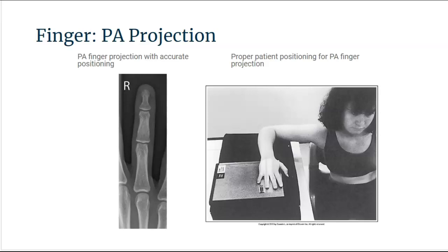The interphalangeal and the metacarpal phalangeal joints are demonstrated as open spaces. The phalanges should be demonstrated without foreshortening. The proximal interphalangeal joint should be demonstrated at the center of the exposure field, and the finger and half of the metacarpal are included within the exposure field.